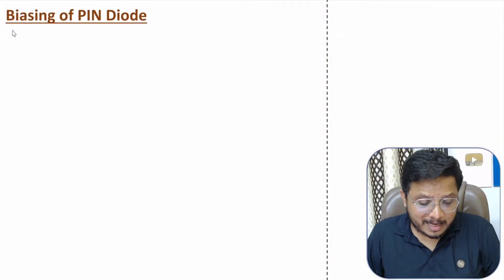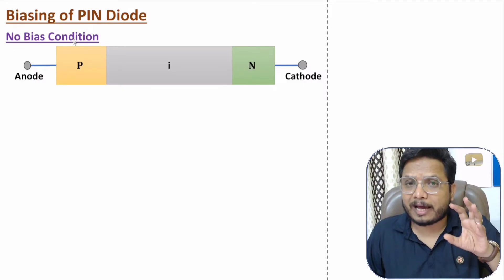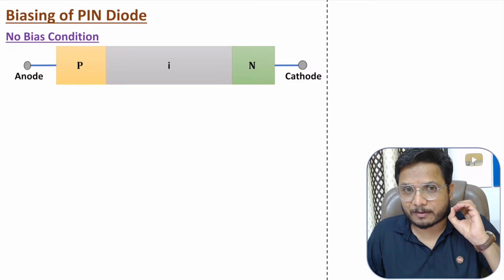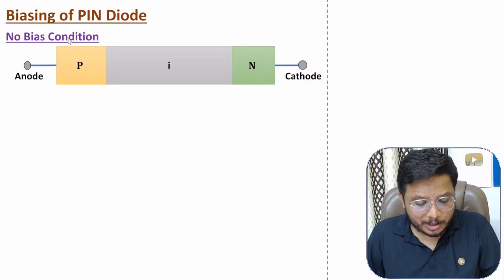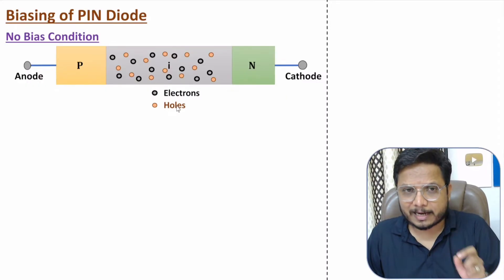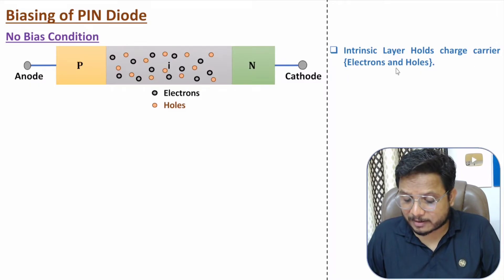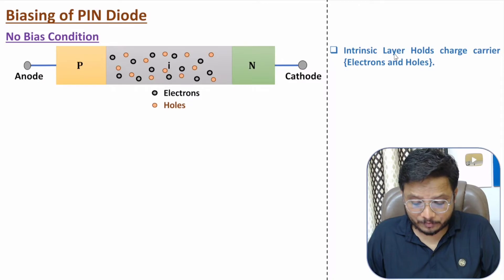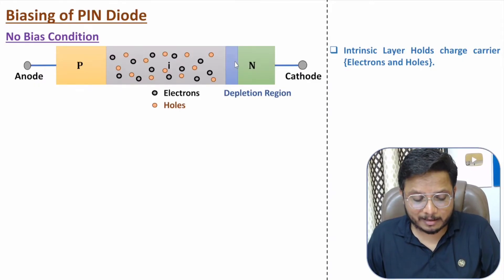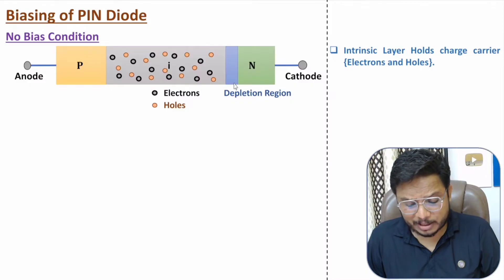Now I'll explain biasing of PIN diode. In the no-bias condition, both anode and cathode are at zero potential. Inside the intrinsic layer, we have charge carriers — both electrons and holes — with no majority carriers. At the I-N junction, there is a depletion region. So under no bias condition, charge carriers are present inside the intrinsic layer with a depletion region at the junction.